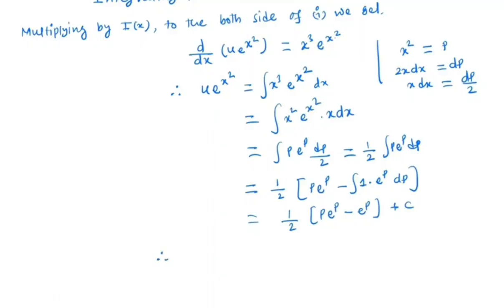So we have u e^(x²) is equal to 1/2 e^p (p - 1), which means 1/2 e^(x²) (x² - 1) + c.